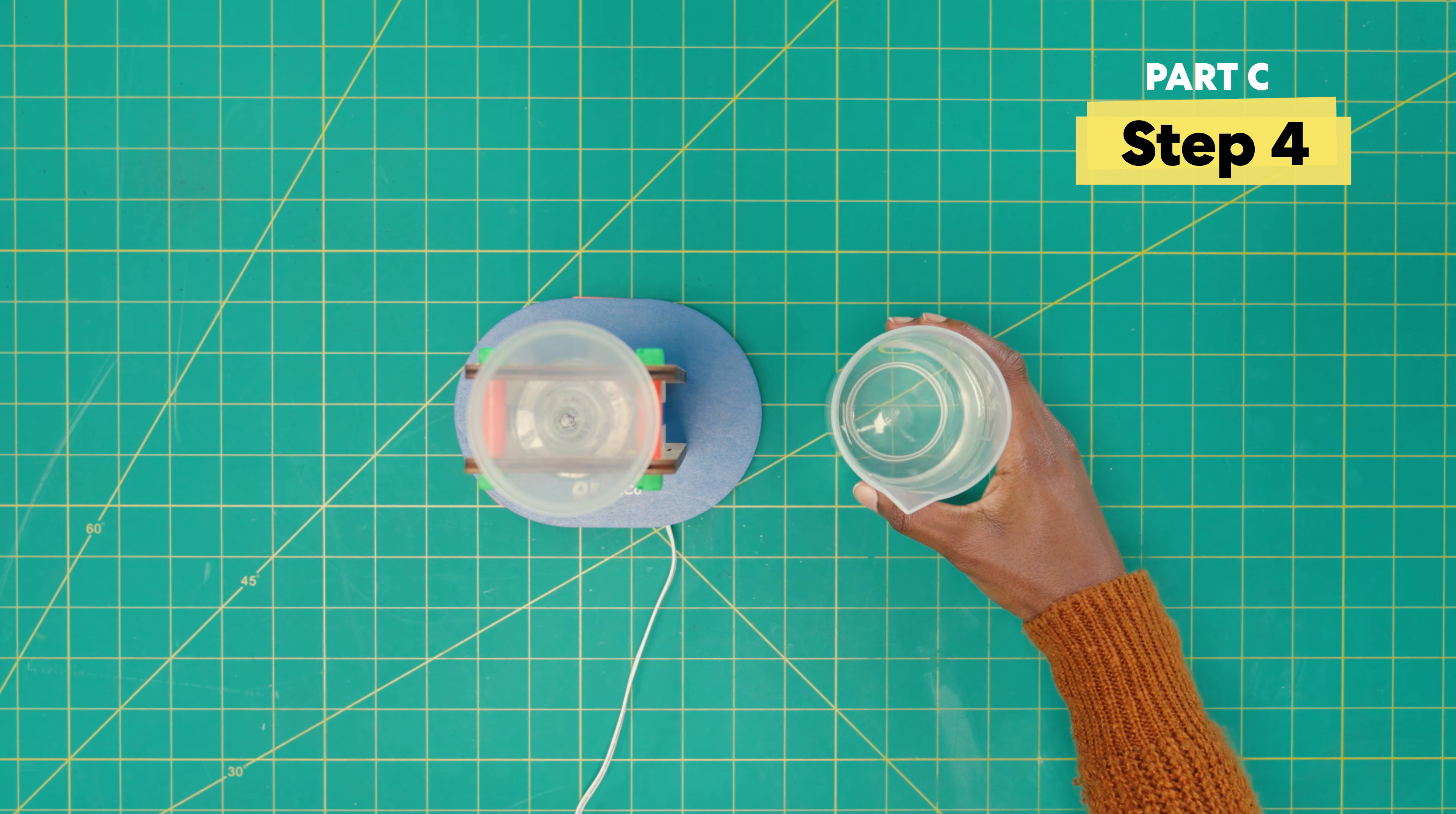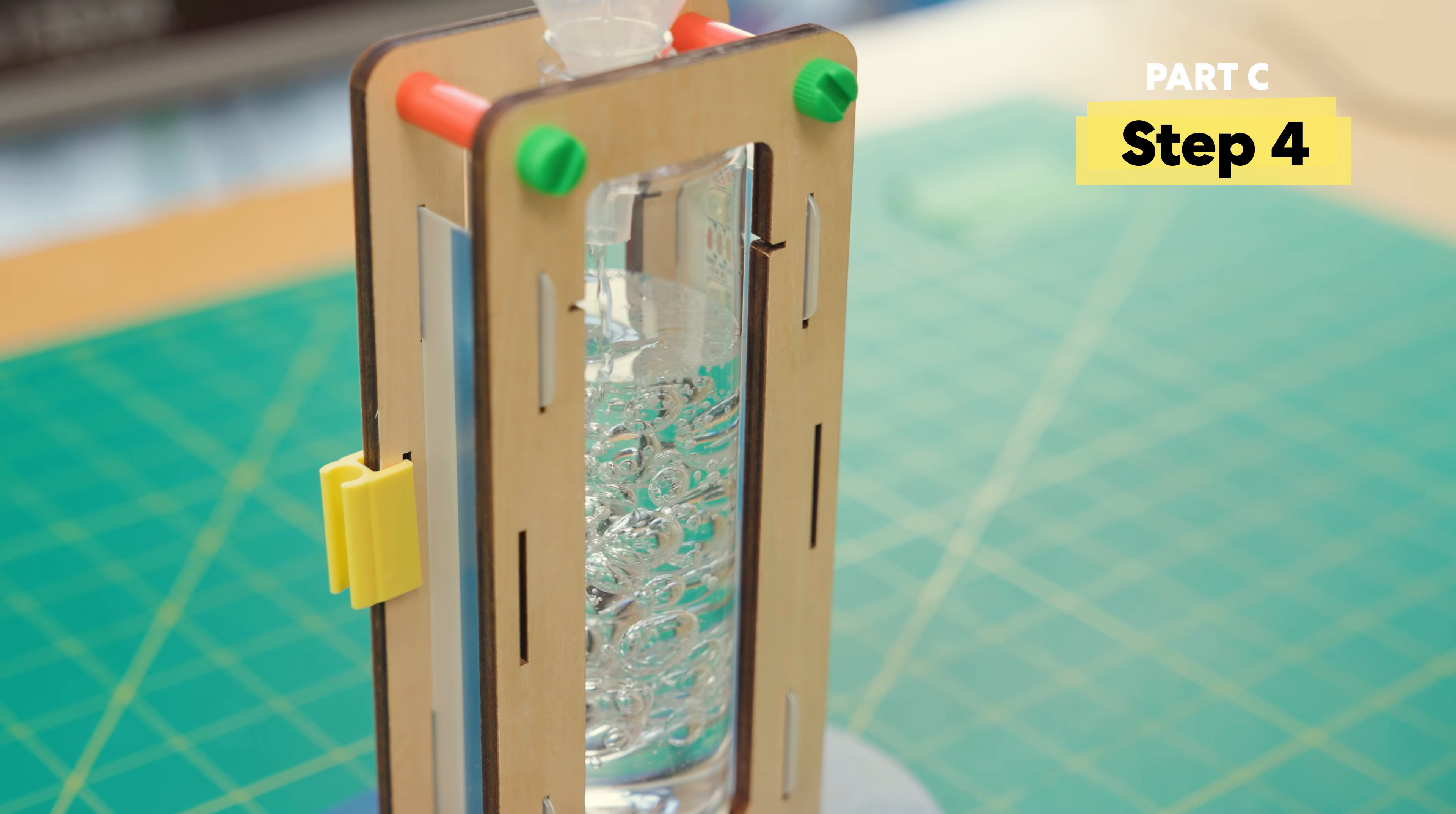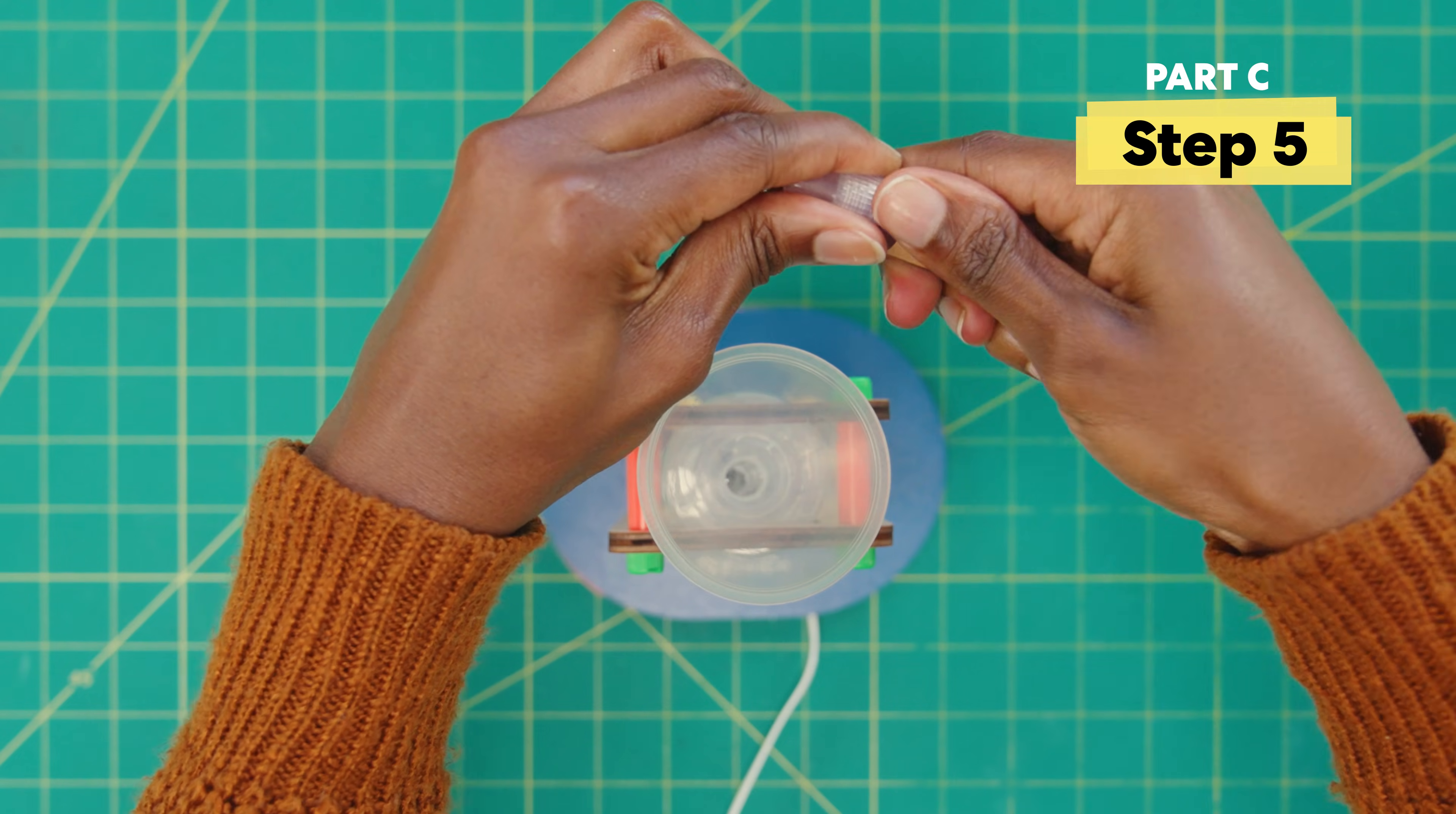Next, fill a cup with water from home. And then pour the water into the funnel up to this mark here. Okay, now add five drops of food coloring.